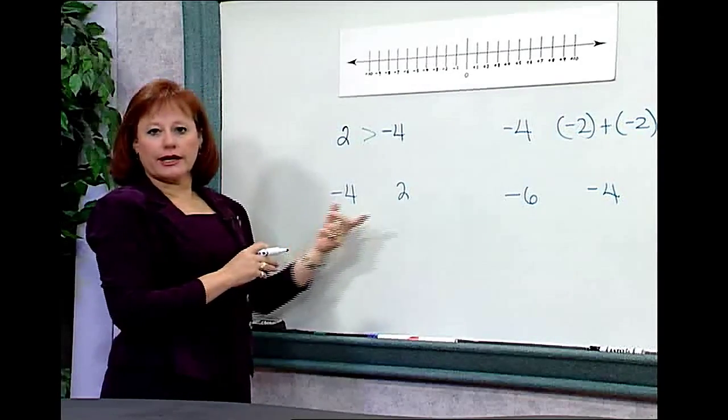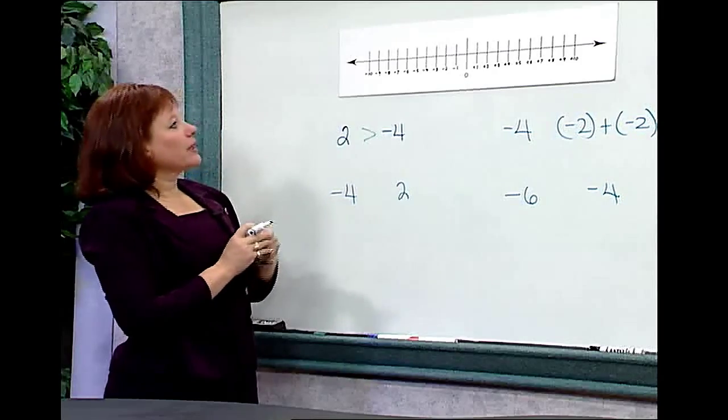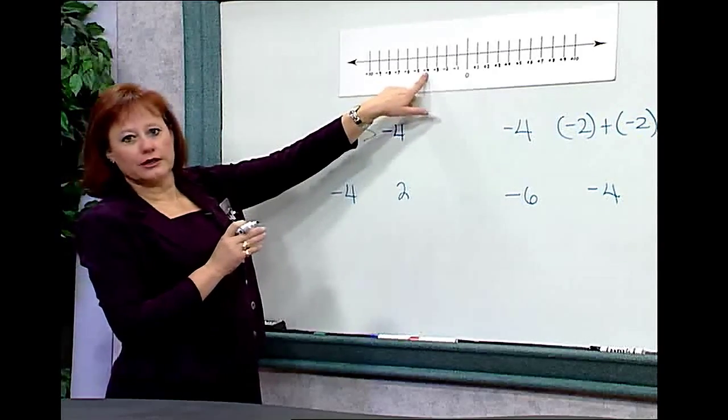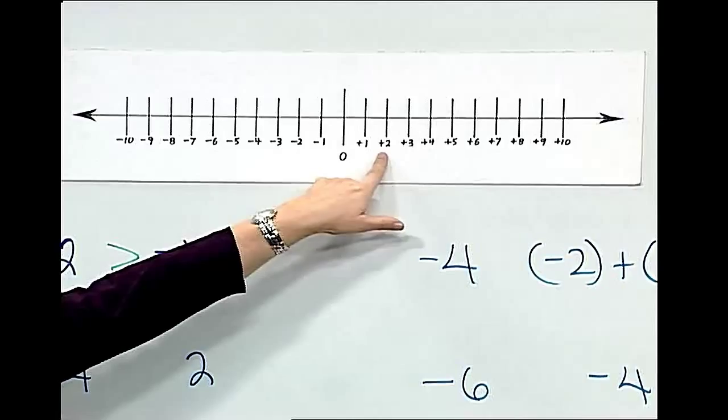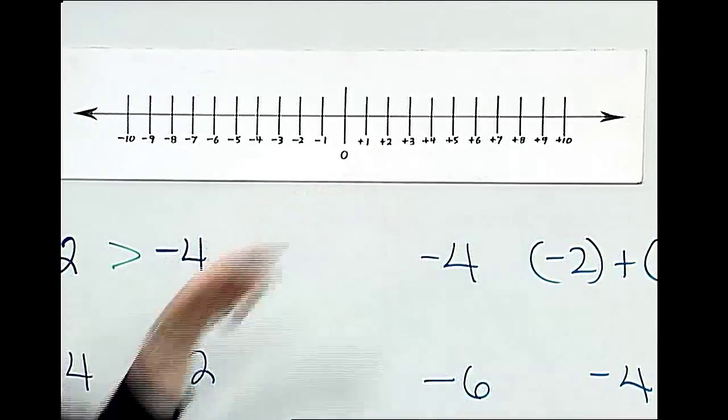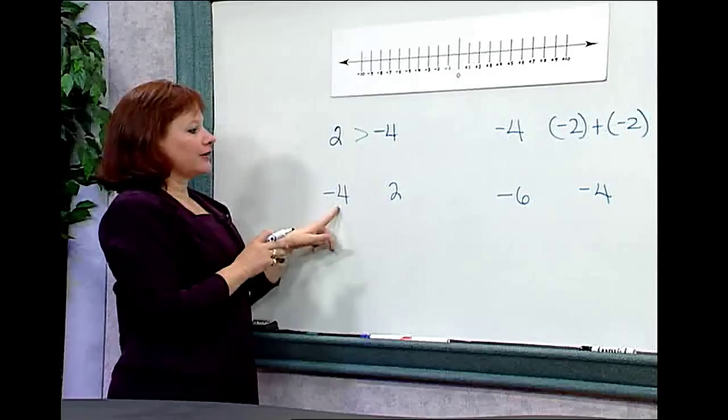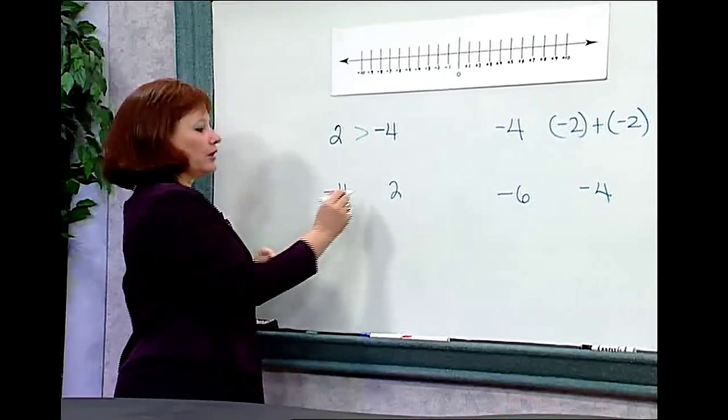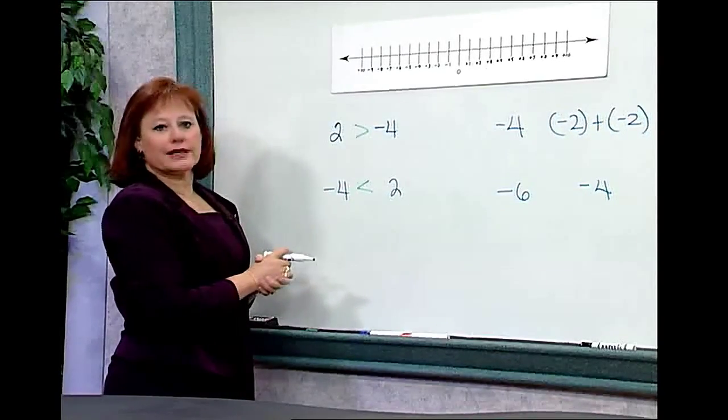As another example, we'll compare negative 4 and 2. If we look at negative 4, we find it on the number line to the left of 0, and we find 2 to the right. Since 2 lies to the right of negative 4, we know it's the larger number, and negative 4 must be less than 2. So we'll write negative 4 is less than 2.